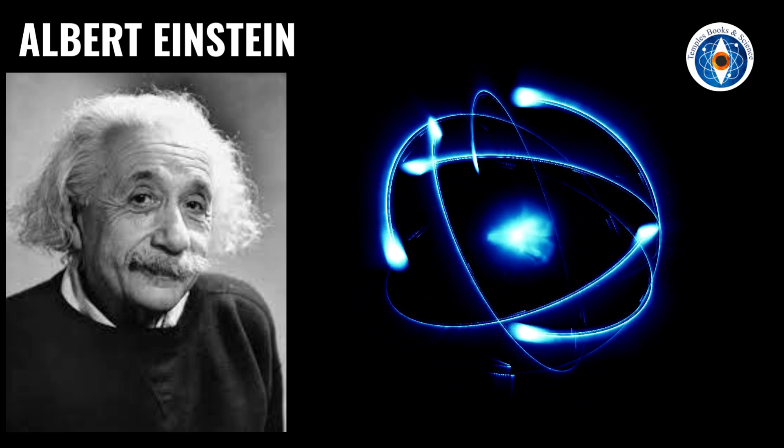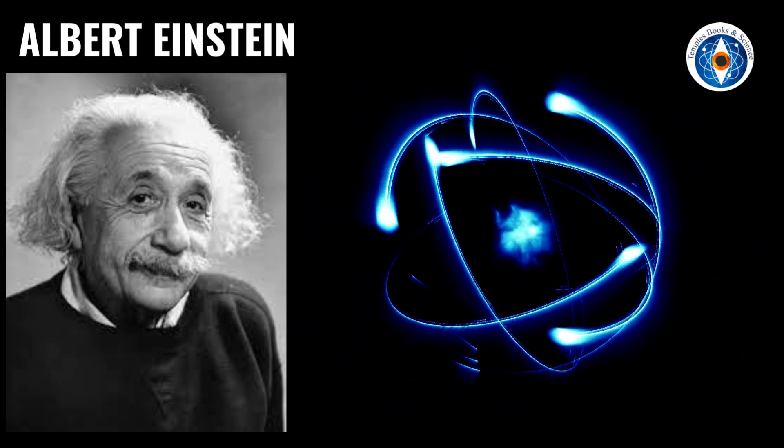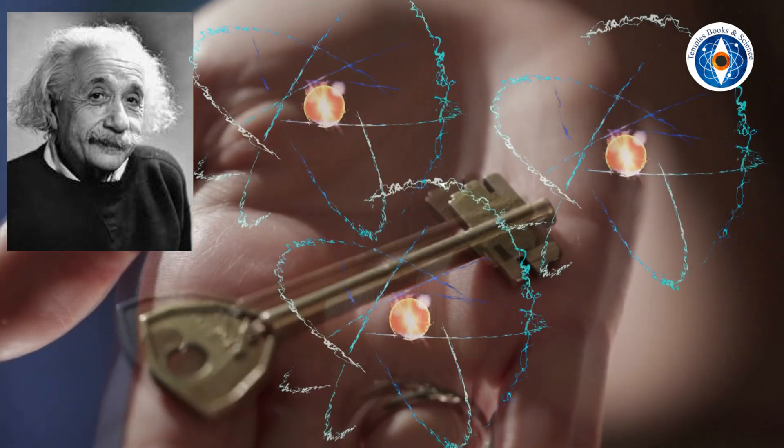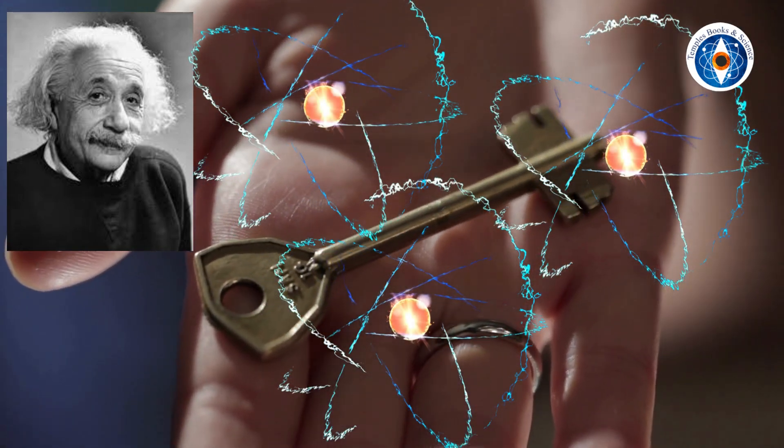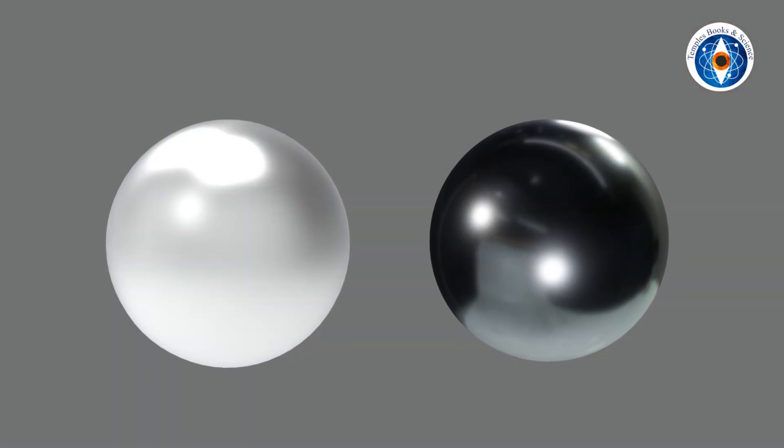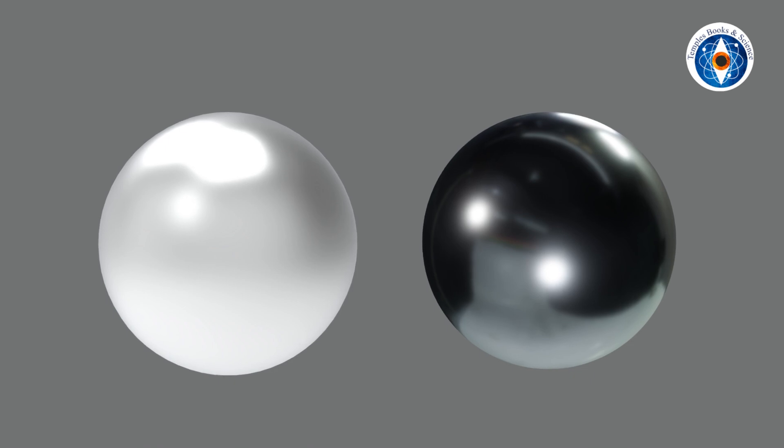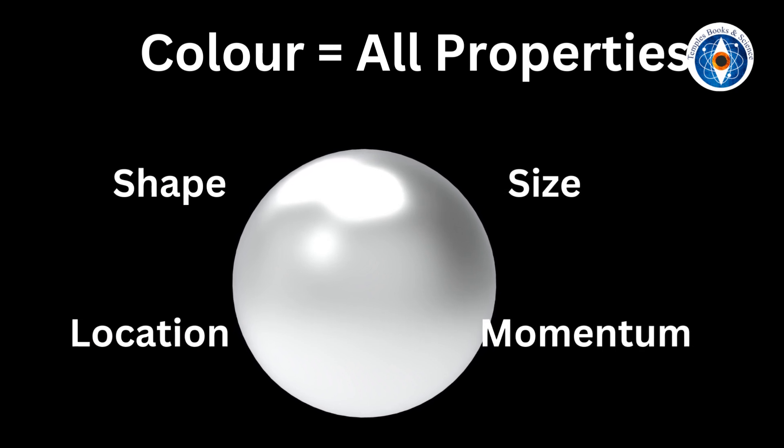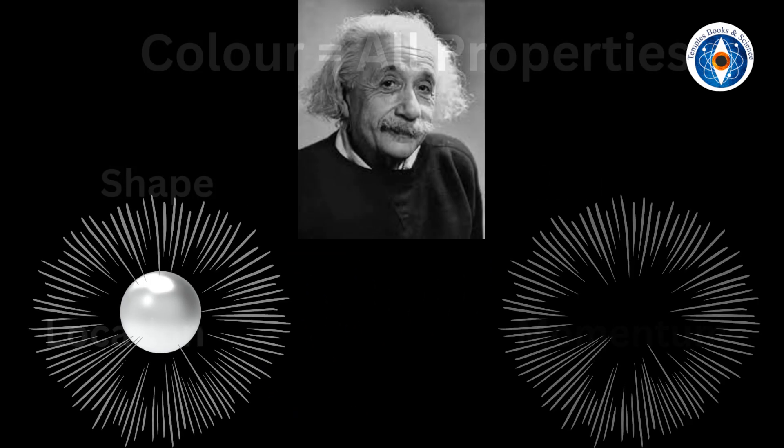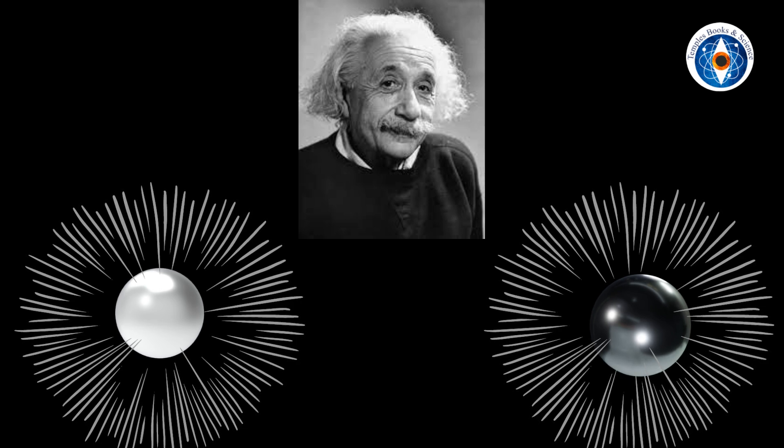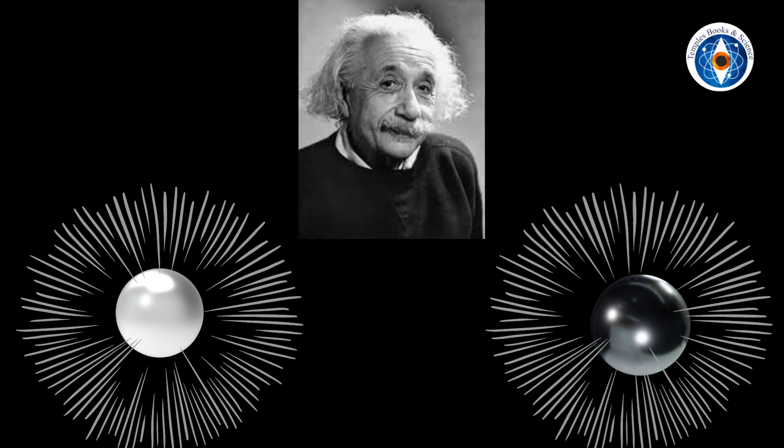Einstein had an alternate explanation for this bizarre behavior of particles. He said that there must be some hidden property of nature that we have not yet discovered. Because we are missing this key piece of information, particles appear unreal to us. Let me explain this with an analogy. Let us assume a particle is a ball which can either be black or white. In this analogy, color represents all the properties that a particle can have, like shape, size, location, momentum, etc. Einstein said that the ball is created either white or black and stays that way. It never ceases to exist.